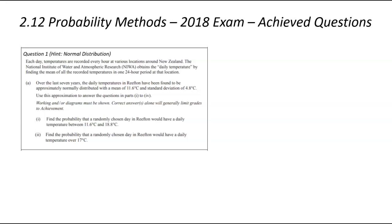Hey guys, Mr. Bowman here. We're looking at 2.12 probability methods and we're going to be focusing on the achieved questions that were throughout the 2018 exam. We're going to start off with question number one, and I've got a bit of a hint related to attribution as well. So let's go through the question.